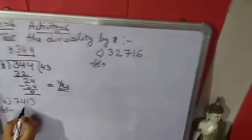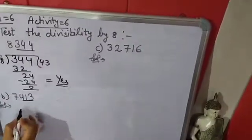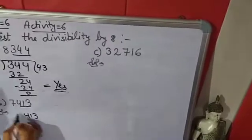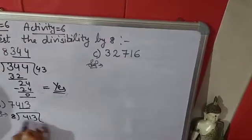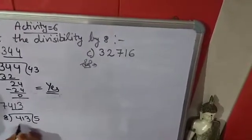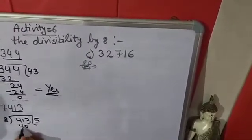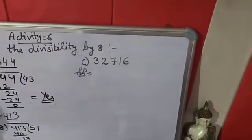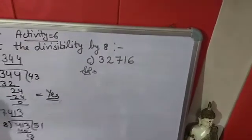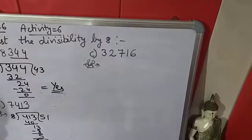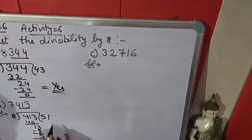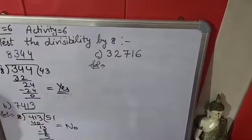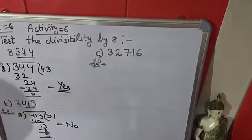Now in the next B part, we will take the last 3 digits again and check if it is divisible by 8 or not. It is not divisible by 8 because there is a remainder, so this complete number is also not divisible by 8.